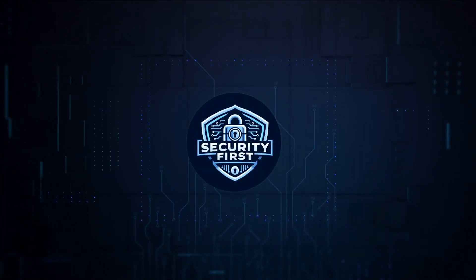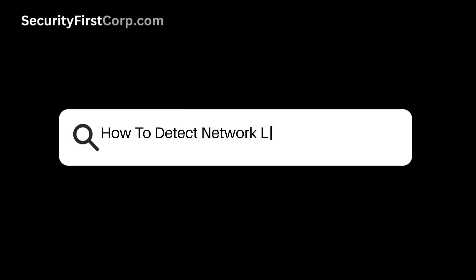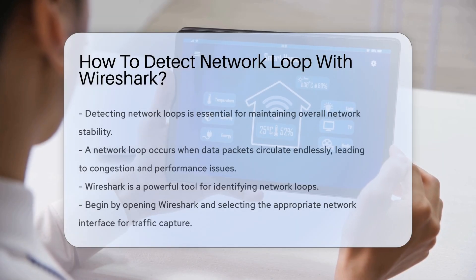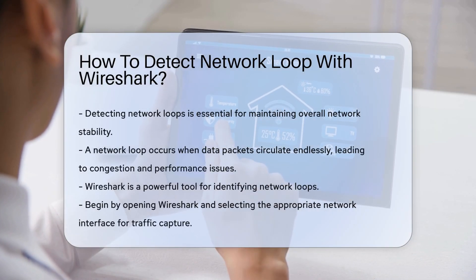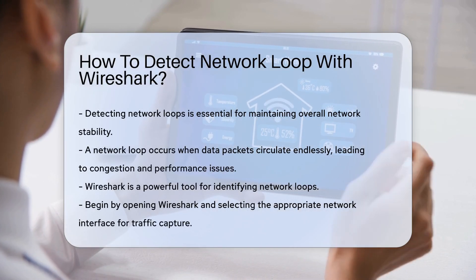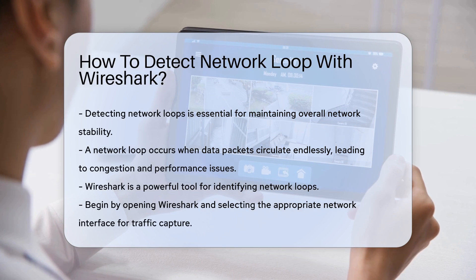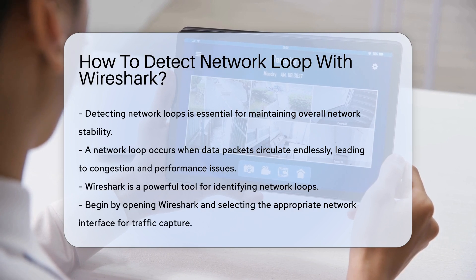Security First Corp. Safety through knowledge. How to detect network loop with Wireshark? Detecting a network loop is crucial for maintaining network stability. A network loop occurs when a data packet circulates endlessly, causing congestion and performance issues.